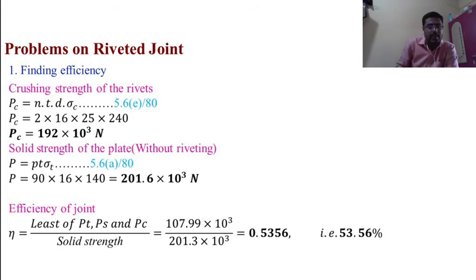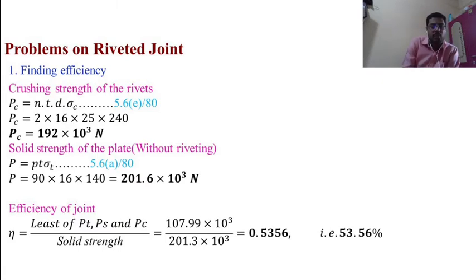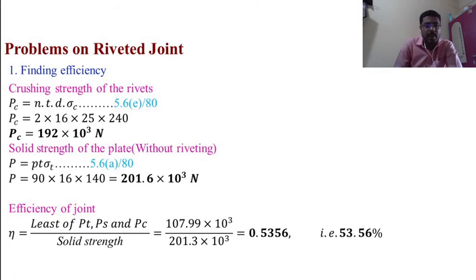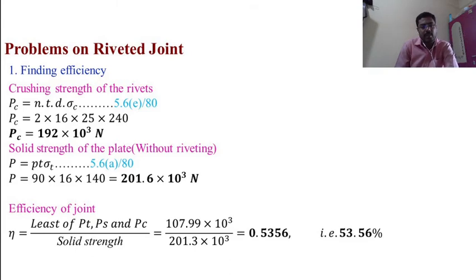Crushing strength of the rivets: Pc = N × t × d × σC — equation 5.6E, page 80. Pc = 2 × 16 × 25 × 240 = 192 × 10³ N.